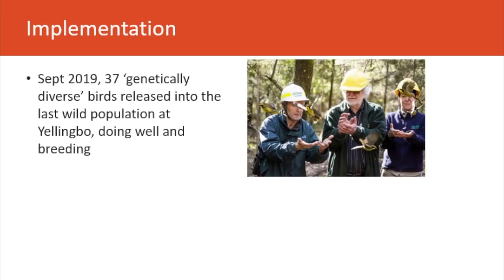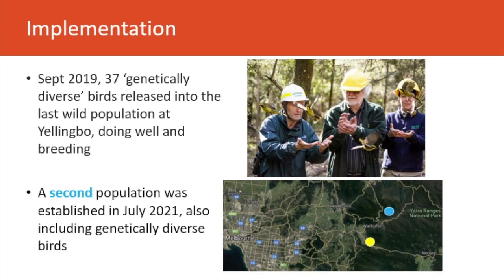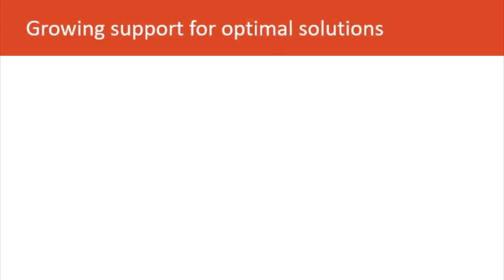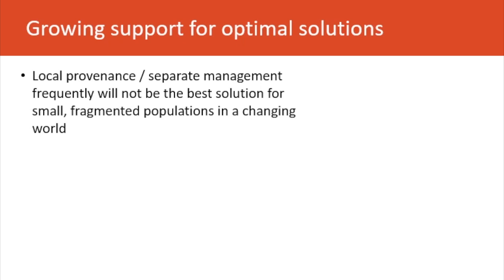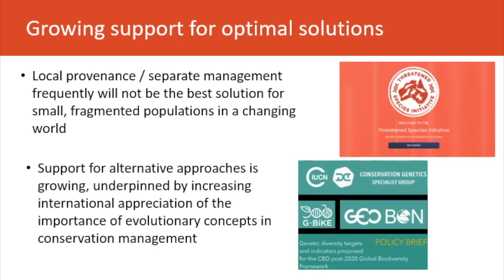Implementation has gone ahead: crossbred birds raised in captivity have been released into the wild, where they are doing very well and breeding. A second population has been established, also including genetically diverse birds, and it too is doing well. Local provenance and separate management frequently won't be the best solution for small and fragmented populations in a changing world. There is growing support for managers to apply optimal solutions, underpinned by increasing international appreciation of the importance of evolutionary concepts in conservation management.